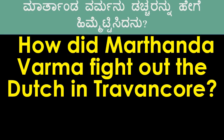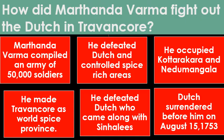In the first lesson, Advent of Europeans to India, you must learn Marthanda Verma, Battle of Plassey and the Battle of Buxar. The question can be like: How did Marthanda Verma fight out the Dutch in Travancore? Marthanda Verma compiled an army of 50,000 soldiers and he defeated the Dutch and controlled spice-rich areas.